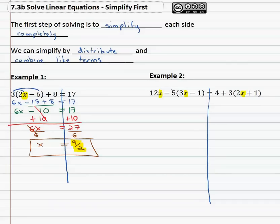On the left side you'll notice we can distribute giving us 12x minus 5 times 3 is 15x. Careful here that's negative 5 times negative 1 is a positive 5 equals. We also can simplify on the right side by distributing so we've got 4 plus 3 times 2x is 6x plus 3 times 1 is 3.